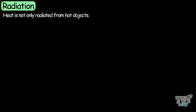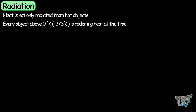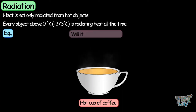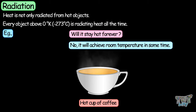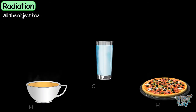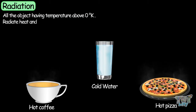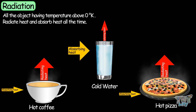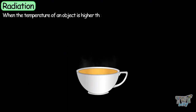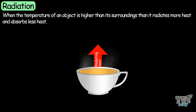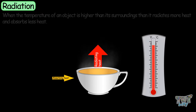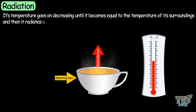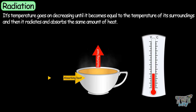Heat is not only radiated from hot objects. Every object above zero degrees Kelvin, or negative 273 degrees Celsius, is radiating heat all the time. All objects above zero degrees Kelvin radiate heat and also absorb heat all the time. When the temperature of an object is higher than its surroundings, it radiates more heat than it absorbs, and as a result its temperature keeps decreasing until it becomes equal to the temperature of its surroundings — at which point it radiates and absorbs the same amount of heat.